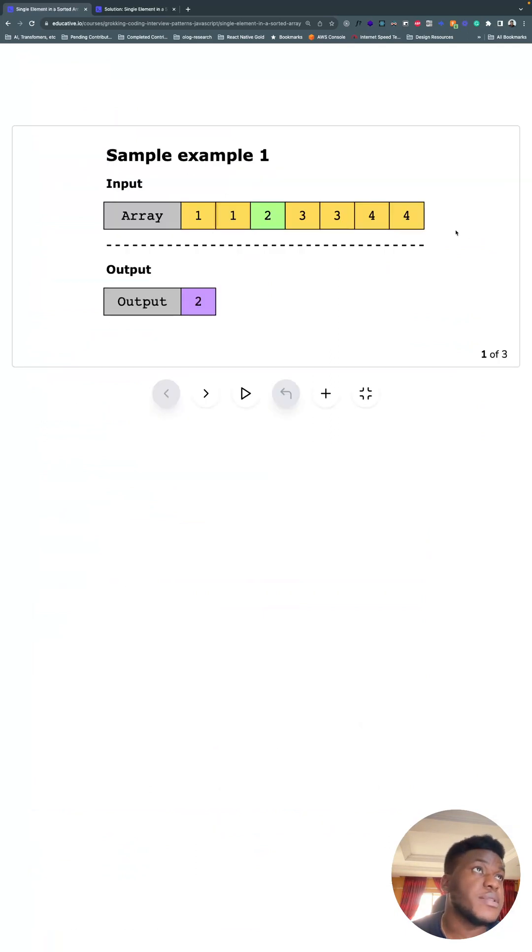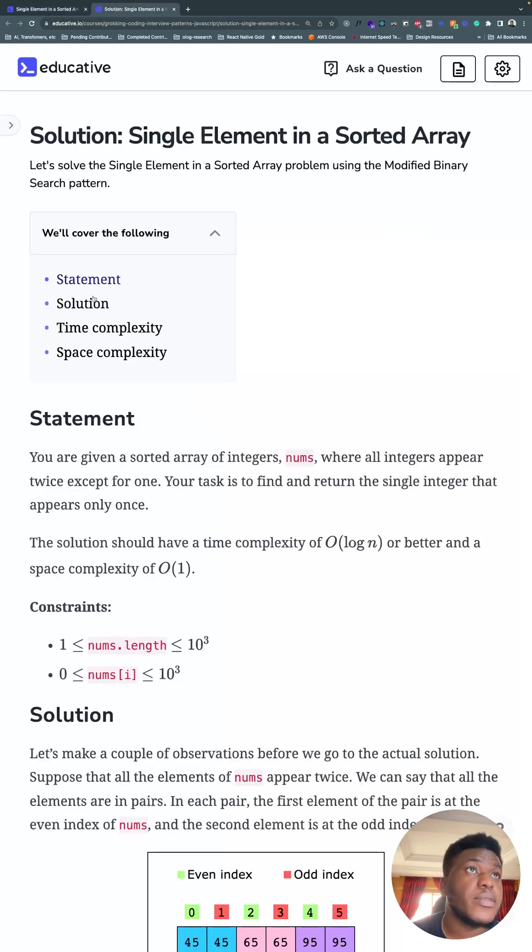Here's what it looks like. We have this array, everything appears twice except two, so return two. Everything appears twice except four, return four. Everything here appears twice except one, return one. That's what it looks like. Now let's look at the solution.